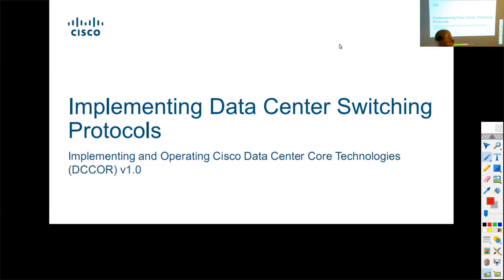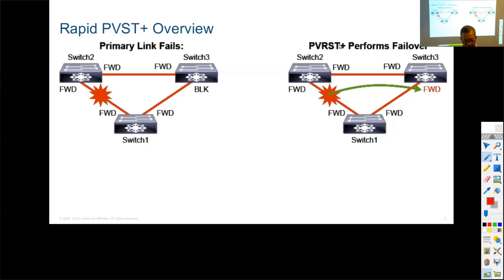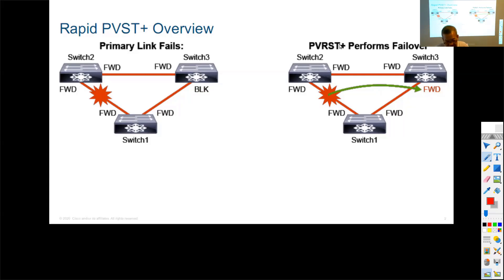Let's take a look at data center switching protocols available inside the Nexus operating system. We're looking at Layer 2 protocols. Spanning tree is very important for the network overall at Layer 2. Spanning tree is there by default — its purpose is always to prevent loops. Within the Nexus OS, as well as other switches running IOS, certain spanning tree protocols are on by default.